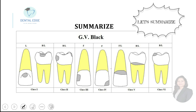To recap: Class one is pit and fissure caries on the occlusal surface of posterior teeth — molars or premolars — and can include the occlusal two-thirds of the buccal and lingual surfaces of molars, and the lingual surface of maxillary incisors. Class two is caries on the proximal surface of molars and premolars. Class three is caries on the proximal surface of anterior teeth without involving the incisal edge. Class four is caries on the proximal surface of anterior teeth with involvement of the incisal edge. Class five is caries on the gingival third of the facial or lingual surface of anterior or posterior teeth. Class six is caries on the incisal edge of anterior teeth or the cusp tip of posterior teeth.